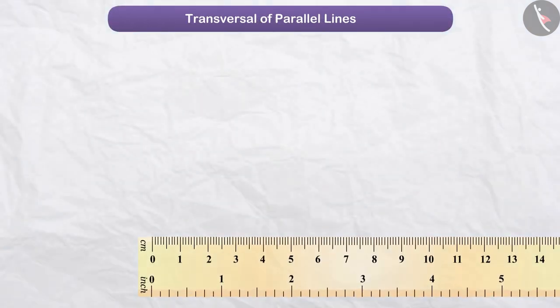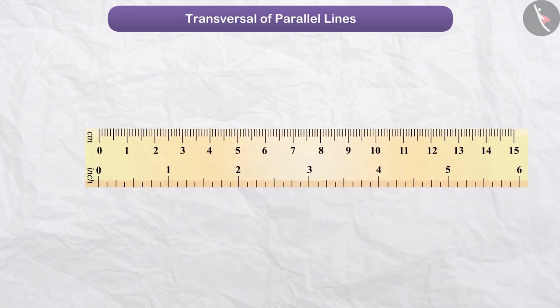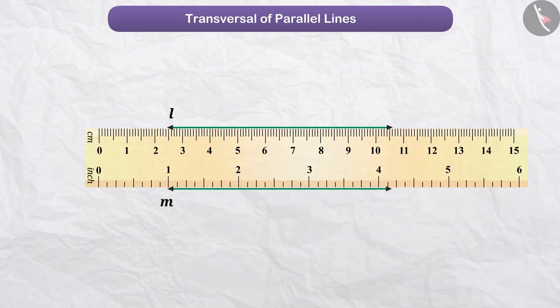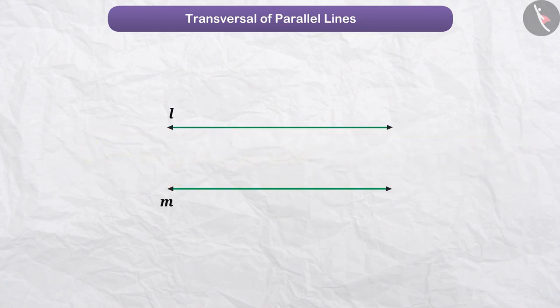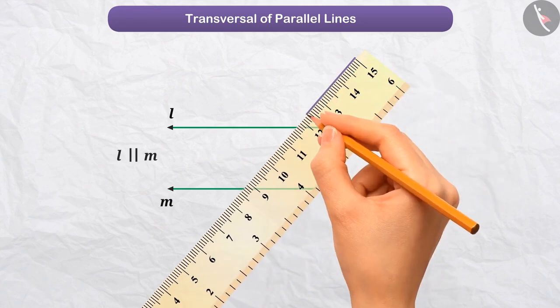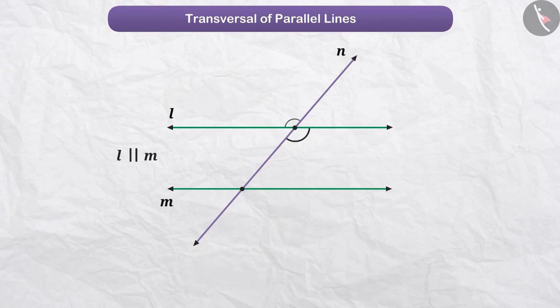We will understand this by doing an activity. By placing the ruler on paper, we will draw a line along its upper edge. Without changing the position of the ruler, we will draw line M along the lower edge. This will give us two parallel lines — line L parallel to line M. Then we will draw a transversal, from which we will get the angles shown.